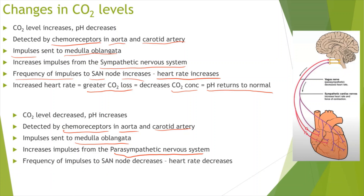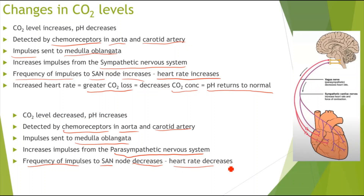So the frequency of impulses sent to the SAN would decrease, and that in turn decreases the heart rate — there will be fewer contractions of the atria, fewer impulses to the AVN, and fewer contractions of the ventricles. As a result, CO2 concentration rises in the blood as less CO2 is pumped out, and the pH returns back to normal.